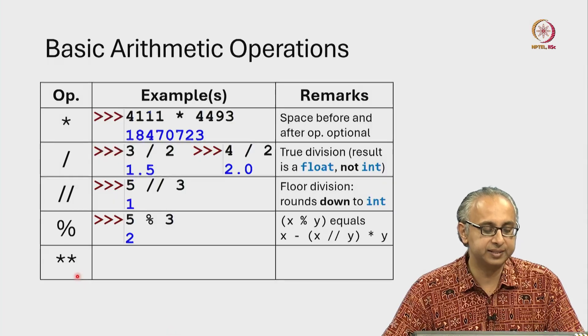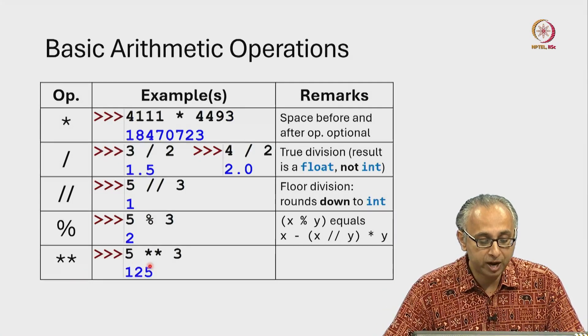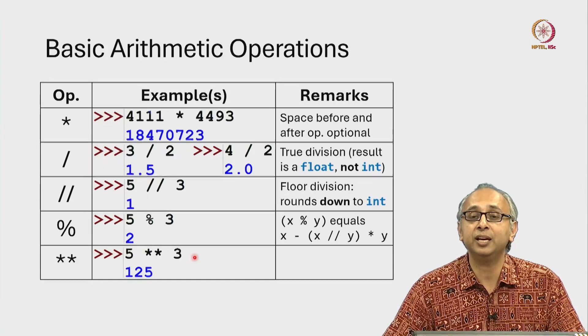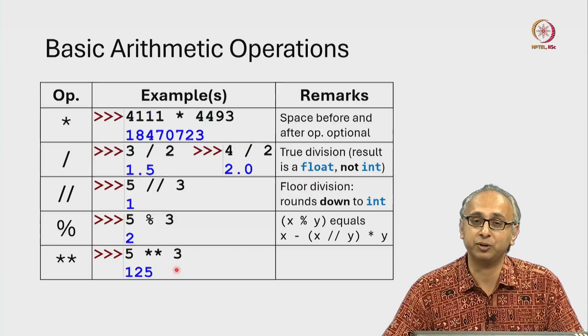Python also has another operator for exponentiation. So 5 star star 3 is 5 to the power 3 which is 125.